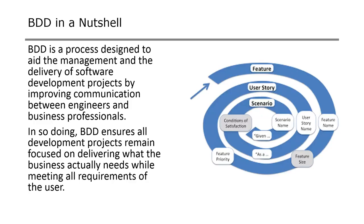The journey of BDD goes like this: the business team comes out with features, estimates and prioritizes them, then we get into user stories. Once we jot down the user stories and identify the definition of done or conditions of satisfaction, we move towards writing specific scenarios — all done by the business. Then developers get involved in writing test cases, implementation, and validating with them. That's how the loop closes.